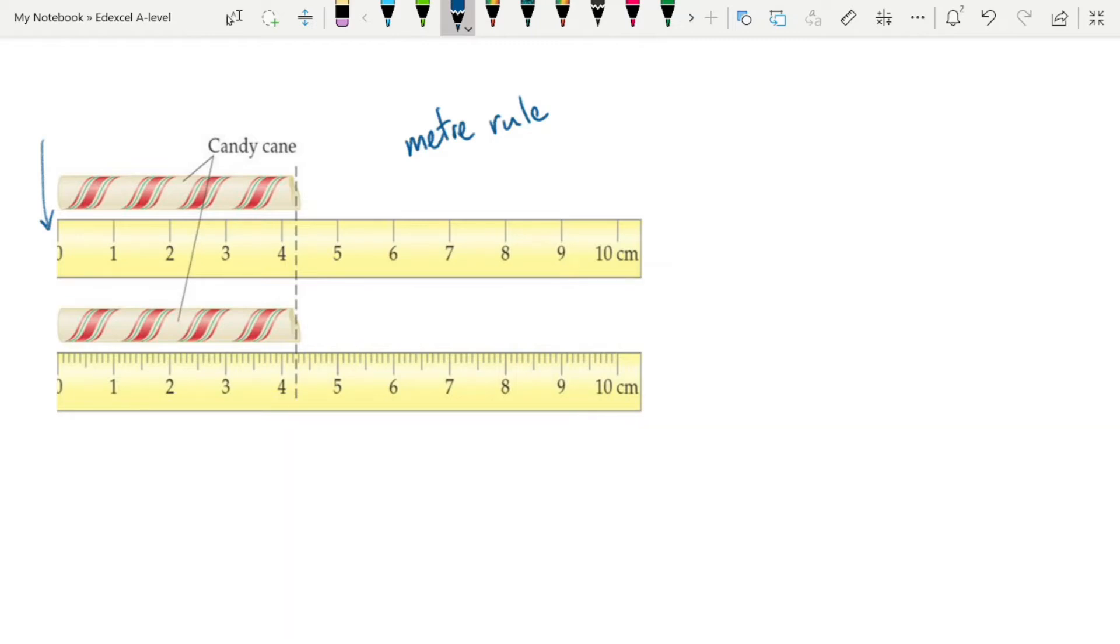In meter rule the end of the rule actually starts at zero as you can see here. With a ruler you will have a little bit of plastic or wood that extends beyond and you have to then line it up with zero. So a meter rule is one that starts at zero and we have two examples here.